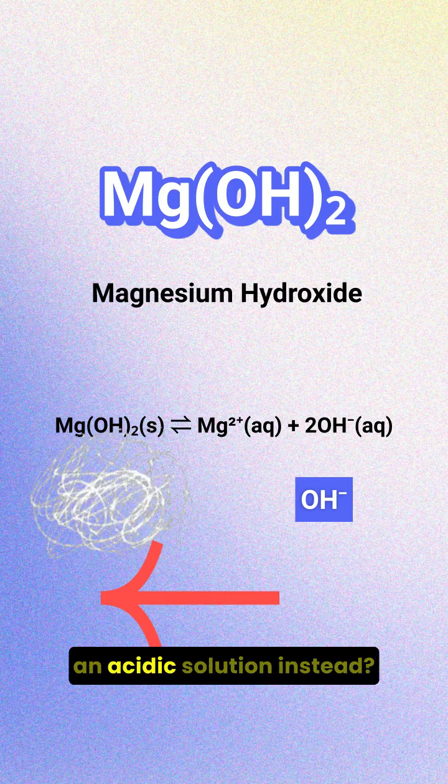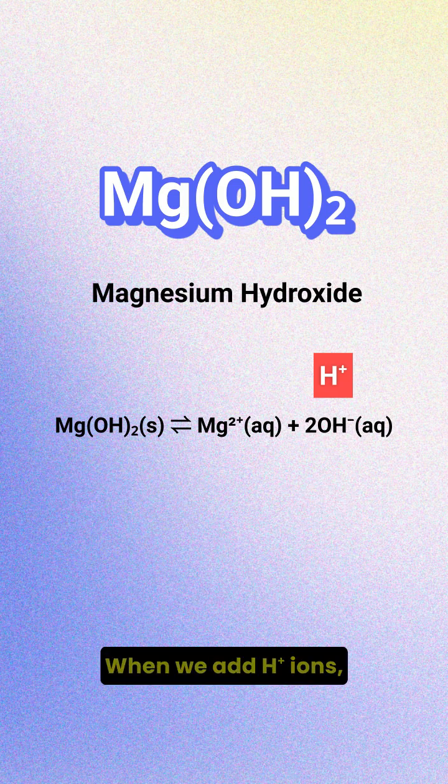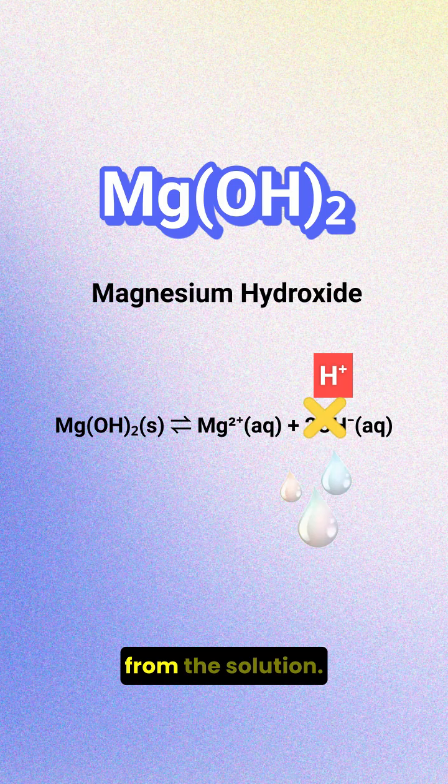What about if we add an acidic solution instead? When we add hydrogen ions, they react with the hydroxide ions to form water. This removes hydroxide ions from the solution.